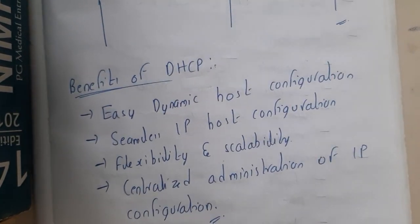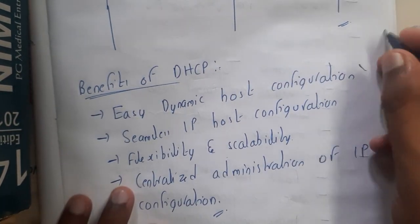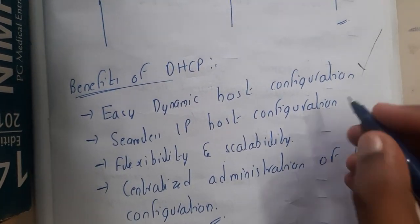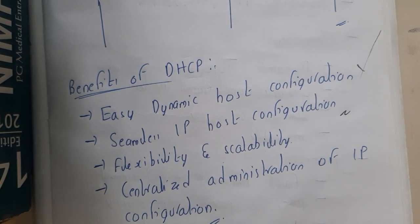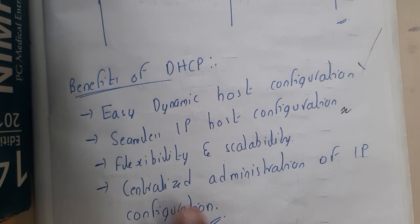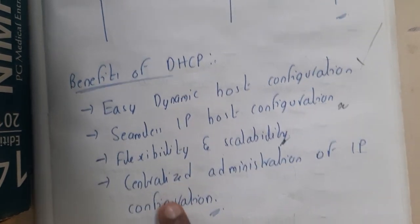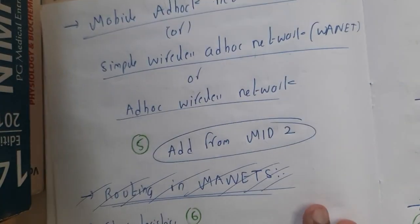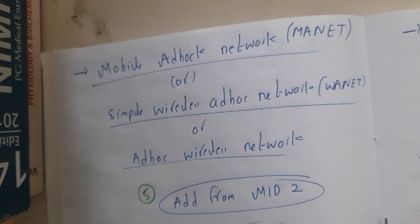Now let us go through some benefits of DHCP. DHCP is the easiest way to allocate IP addresses. You can allocate seamlessly for thousands of devices within few minutes or seconds. It is flexible and scalable. It is centralized administrator for IP, so basically IP configuration everything will be at a single place and you can access them at any moment of time.